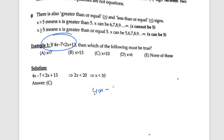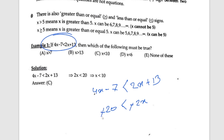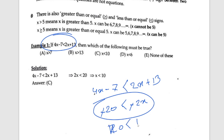4x minus 7 less than 2x plus 13. You can change a sign — like I'm going to subtract 2x from both sides: less than minus 2x. You can change a sign.